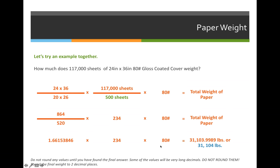You do not want to round any of the values along the way until you get to the very end, and then you can round to two decimal places. In this example, the total weight of these sheets of paper will be 31,103.9989 pounds, and when I round it to two decimal places, it actually rounds up to an even 31,104 pounds. Please note that that is just a coincidence — it will hardly ever happen that the weight of your paper will be an exact pound, because we want whole sheets, not whole pounds, and a whole sheet of paper does not have to weigh an even pound.